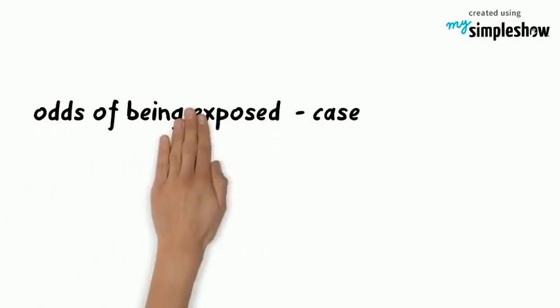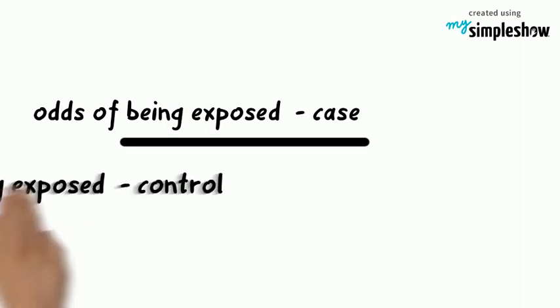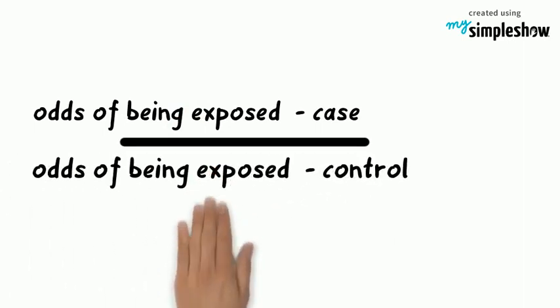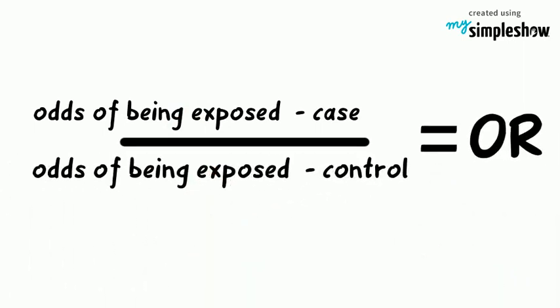For each of the risk factors, the odds of being exposed if they were a case, as compared to the odds of being exposed if they were a control — this is called an odds ratio.